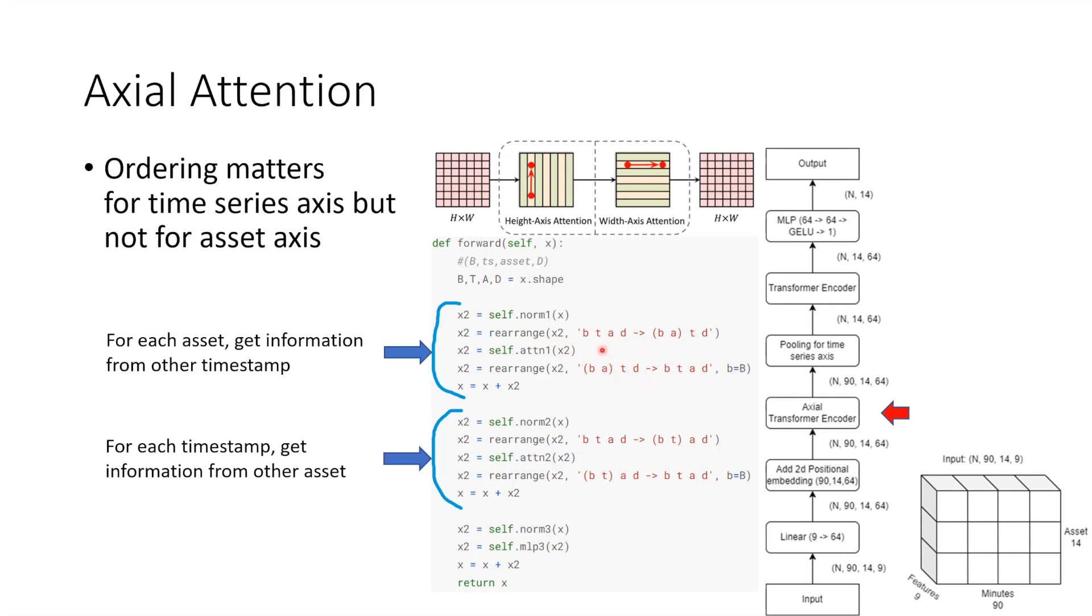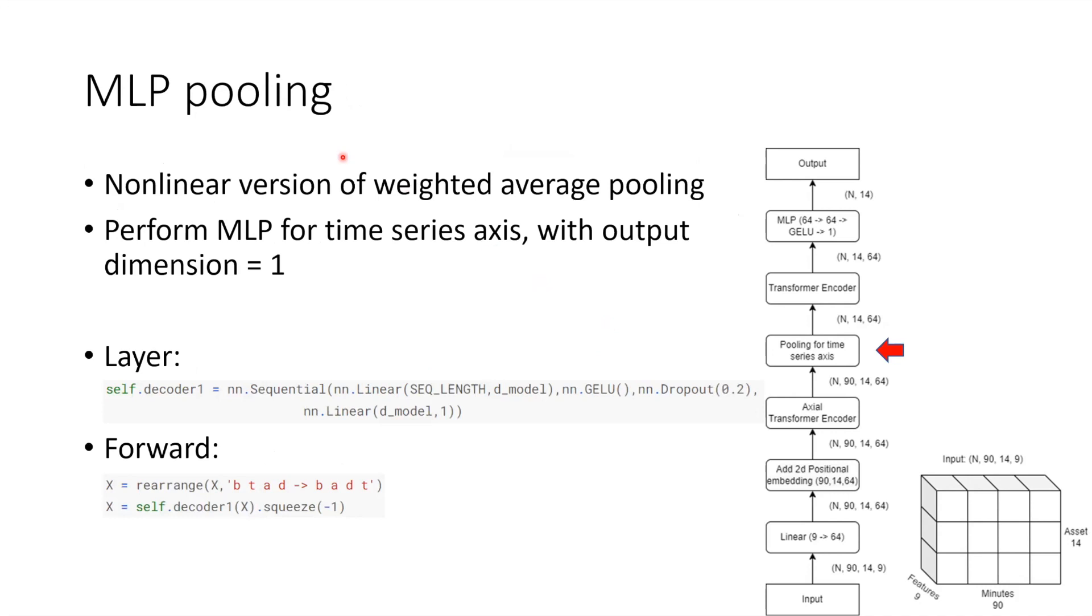For the pooling layer I use so-called MLP pooling. The idea is kind of similar to MLP mixer. You can see this as a non-linear version of weighted average pooling. If we use a linear layer without bias we are trying to multiply each node in different timestamps by a learnable weight and then sum all nodes in different timestamps together. Here I try to replace the linear layer with an MLP layer and I found that this works better than max pooling and also GeM pooling.